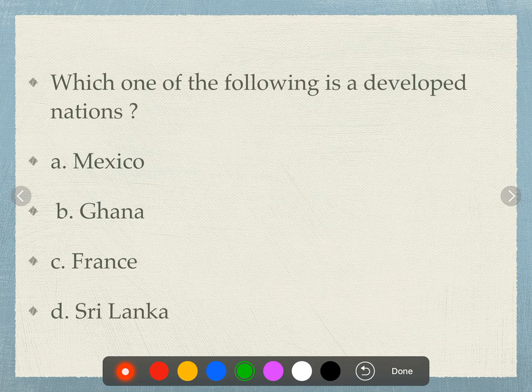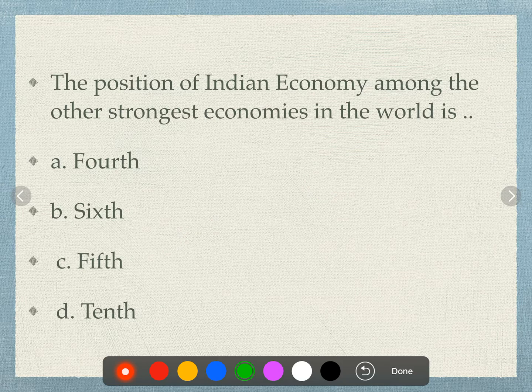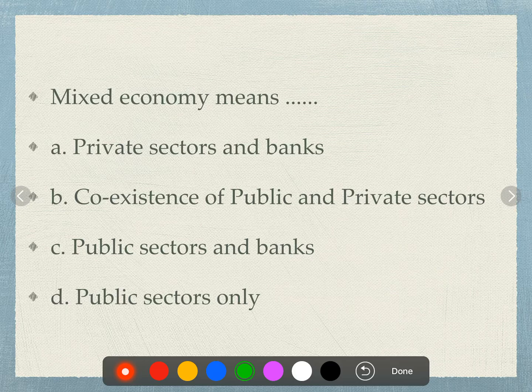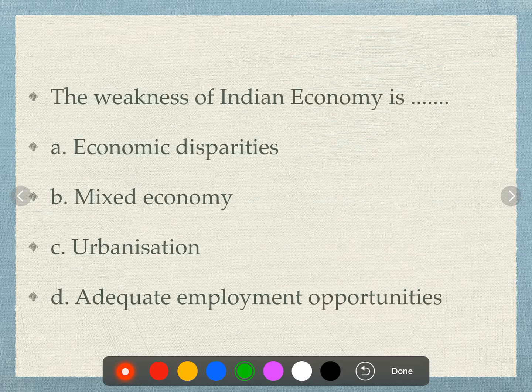India's position among the world's strongest economies is sixth place, which is very important. Mixed economy means the co-existence of public and private sectors. The weaknesses of the Indian economy include economic disparities, urbanization, and inadequate employment opportunities.